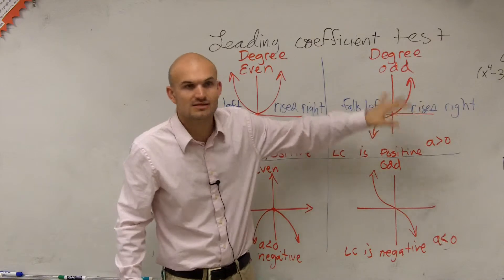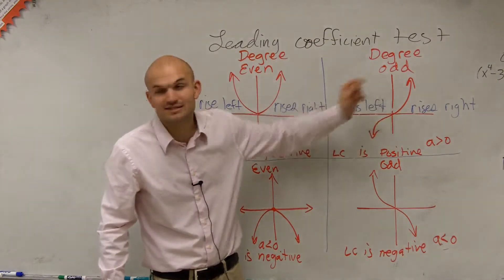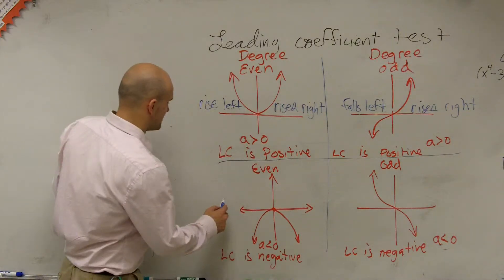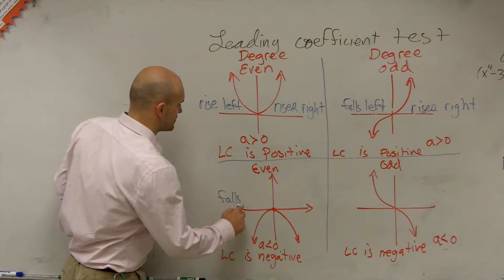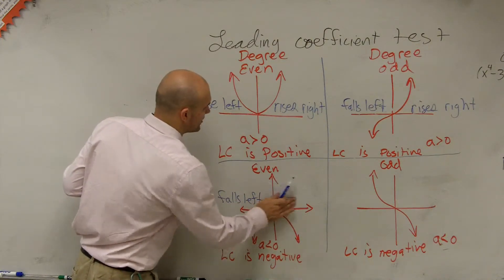9, 27, doesn't matter, where your leading coefficient is positive, you're going to have the same end behavior. And then for this one, I'll just finish it up. This one falls left and falls right.